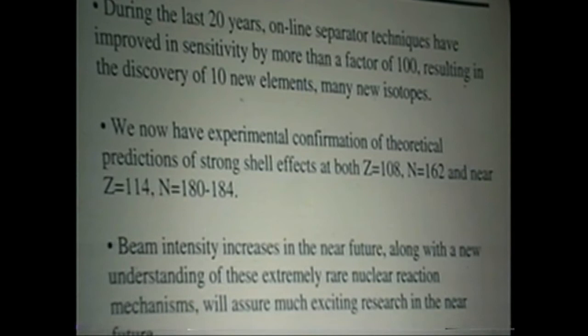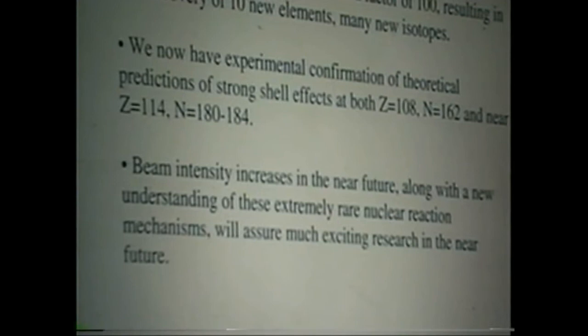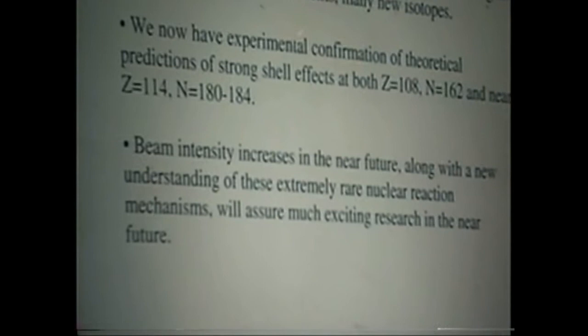Long ago, I guess during the late 1960s, there were predictions that nuclear shell effects would give super-heavy elements around proton number 114 and neutron number 184. More recently, in the early 90s, the calculations were improved and showed that for deformed shapes, there should also be some shell effects near proton number 108 and proton number 162. Both of those predictions have been experimentally confirmed. We do have two regions of nuclear stability, so that's very exciting.